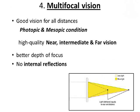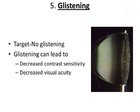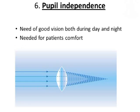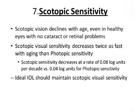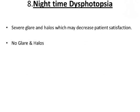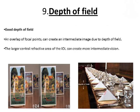Our aim is to provide good visual acuity for all distances, both during photopic and mesopic conditions. The ideal IOL should not cause any glistening, because this leads to decreased contrast sensitivity and visual acuity. Good visual acuity should be provided both during day and night, and scotopic sensitivity should be maintained by the ideal IOL.